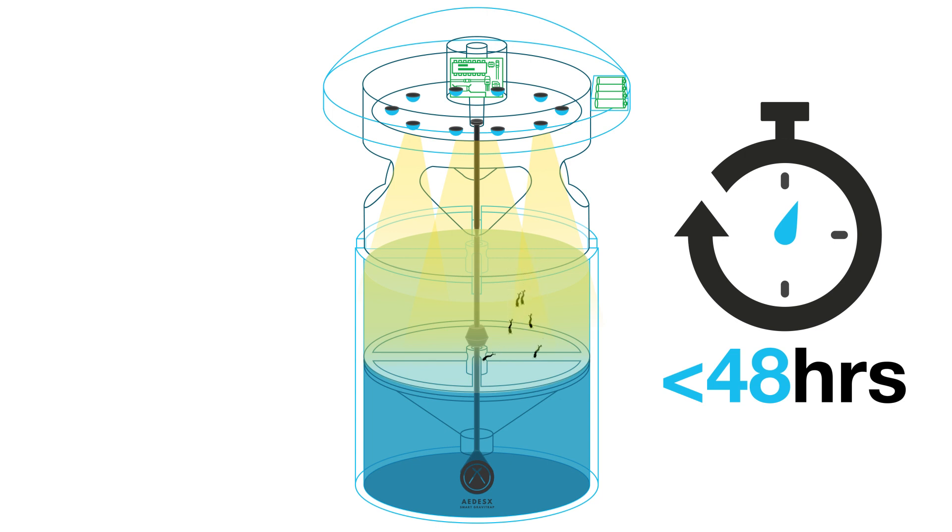Aedes larvae present within the trap are exposed to the repellent negative phototaxis LED lights and immediately move away from it, wriggling down the funnel and through the opening at the end of the funnel directly into the kill zone water reservoir.